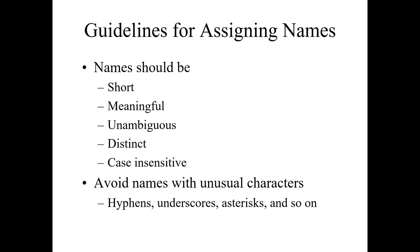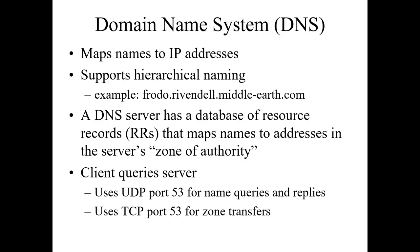Let's look at some guidelines for assigning names — transitioning to our naming portion now. Names should be meaningful, not ambiguous, and distinct. Avoid names with unusual characters like hyphens, underscores, asterisks, and special characters in general. Our DNS maps names to addresses and addresses to names. It supports a hierarchical naming structure, and that's how the internet works. A DNS server has a database of resource records that map names to addresses, and that server is a zone of authority — its sphere of control.